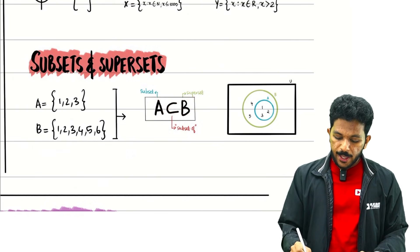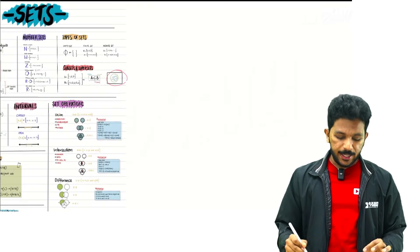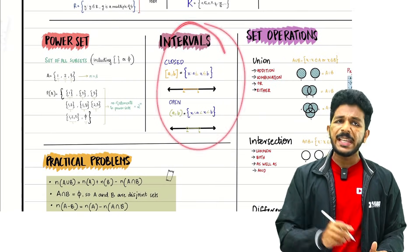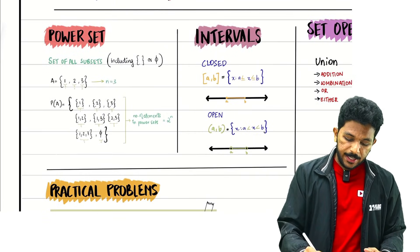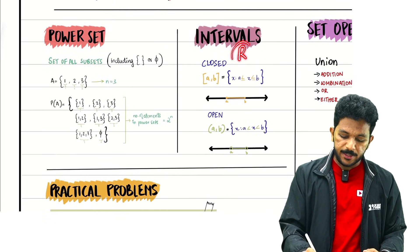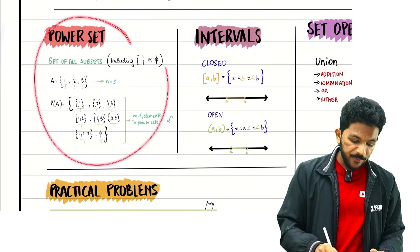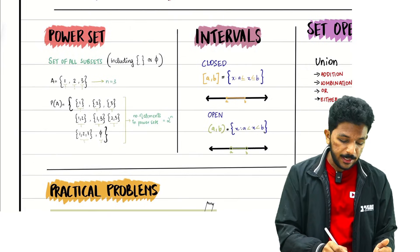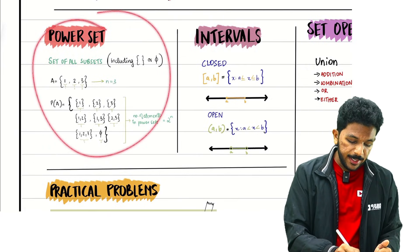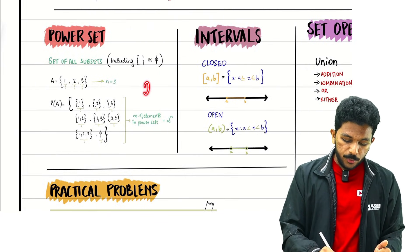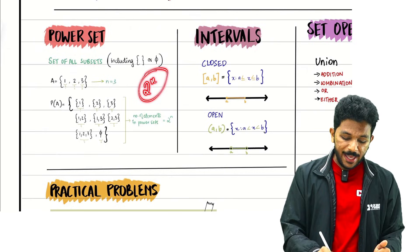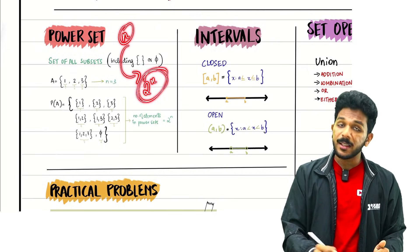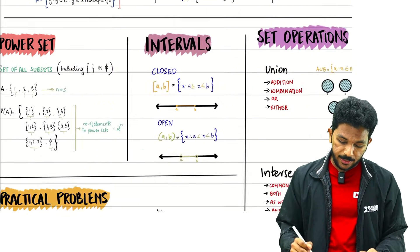Subset has its own symbol. There is a Venn diagram. Interval — real numbers are a subset. Power set is important. Power set is a set of all subsets. It has 2 raised to n elements, so the number of subsets is 2 raised to n.